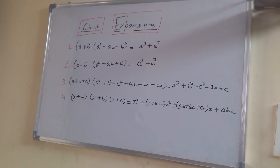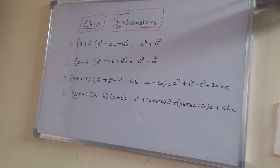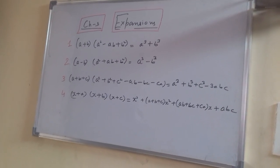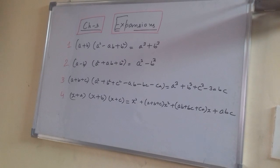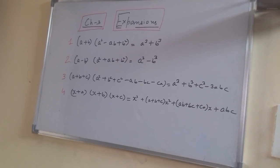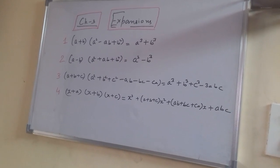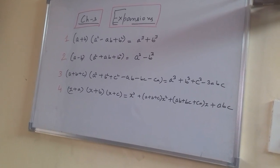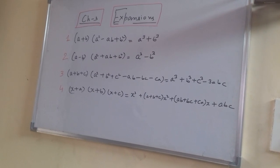The second formula is: (a - b) multiplied by (a² + ab + b²) is equal to a³ - b³.